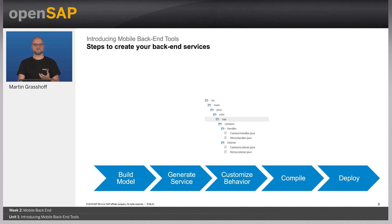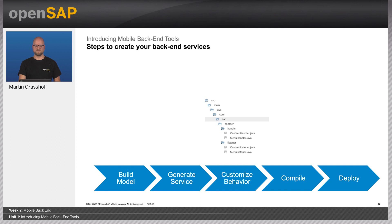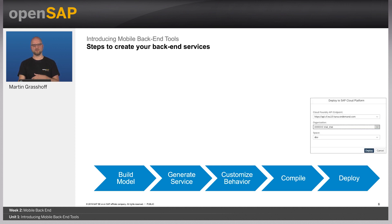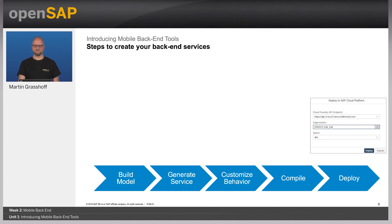You then have the option to modify the behavior of the service, but it's already fully implemented and supports complete CRUD operations on your model. Other features like filter, select, and other OData features are supported already — so the service is ready to go. With a Java project, you compile it. Once compiled, you get either a WAR file or an MTAR (multi-target archive) that you can directly deploy to run and host the service — in this case, deploy to Cloud Foundry as a standard Java application.